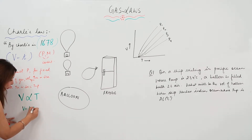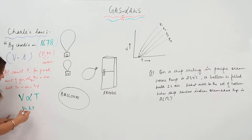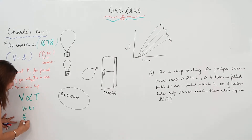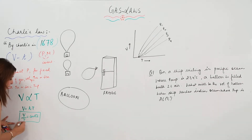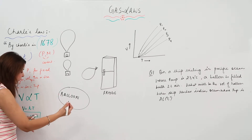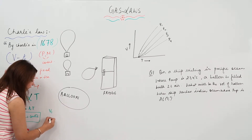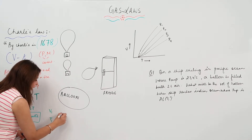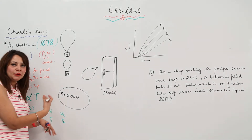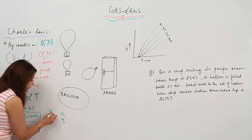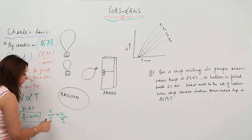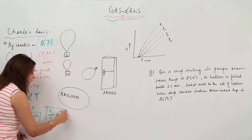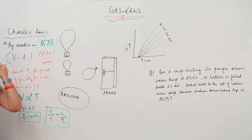Mathematically, we write V = K × T, where K is a constant. This means V/T = constant. If a gas has volume V1 at temperature T1, and we heat it so temperature changes to T2 and volume becomes V2, then we have the expression: V1/T1 = V2/T2. This relationship allows us to relate changes in temperature and volume.